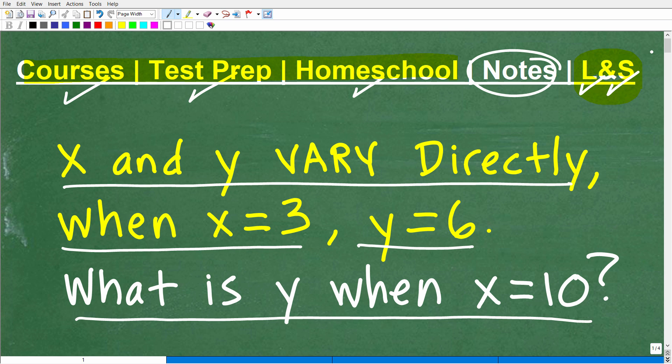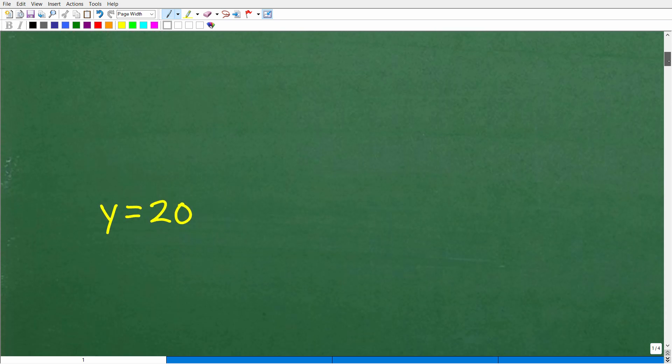Okay, so let's go ahead and get into this. We have right here a direct variation problem. If you've never seen this before, I'll explain this in a second. But let's take a look at the answer. So x and y vary directly. When x is equal to 3, y is equal to 6. What is y when x is equal to 10? Well, y is equal to 20.